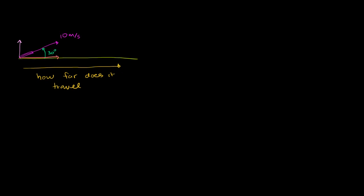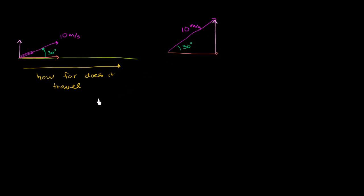The first thing we want to do is break down this velocity vector — which has a magnitude of 10 meters per second and an angle of 30 degrees with the horizontal — into its x and y components, or its horizontal and vertical components. Let me draw it: that's the horizontal component, and this is the vertical component. To find the vertical component, we know the hypotenuse of this right triangle and the angle, and the vertical component is opposite the angle. So we write down SOH-CAH-TOA: sine is opposite over hypotenuse.